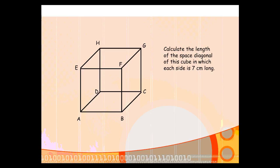Here's another example. Let's say you're asked to find the length of the space diagonal of a cube in which each side is 7 centimeters long. A face diagonal runs across one of the faces of the cube, whereas a space diagonal goes right the way through the cube from one corner to the other diagonally. That's an example of a space diagonal going from A to G. Since this is a cube, all the space diagonals will be the same length.